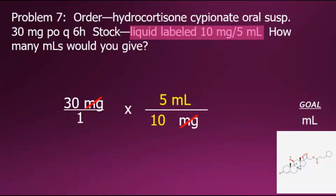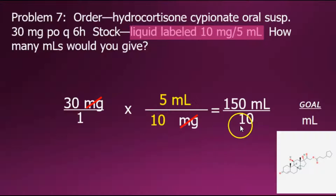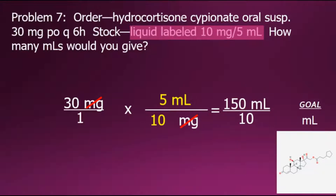To multiply fractions together, we multiply the numerators together — 30 times 5 for the new numerator — and multiply denominators together for the new denominator. Here we have the remaining unit of milliliter in our answer, which was the goal. One final step is to simplify the division of the numerator 150 divided by the denominator of 10, with the quotient of 15 milliliters — our final simplified answer for this problem.